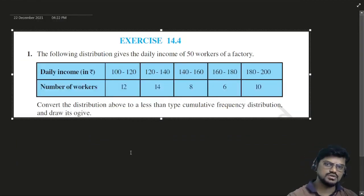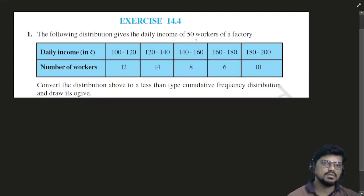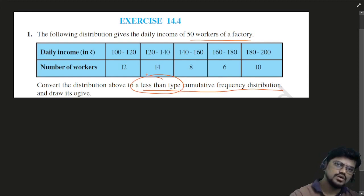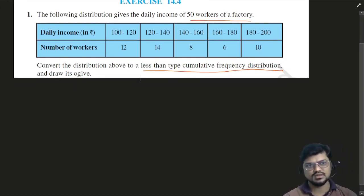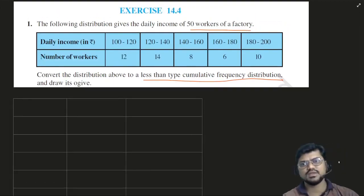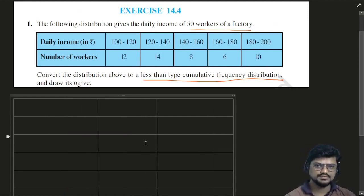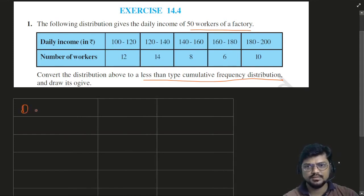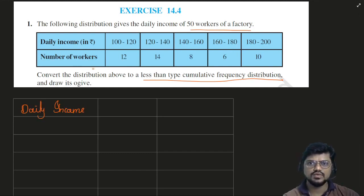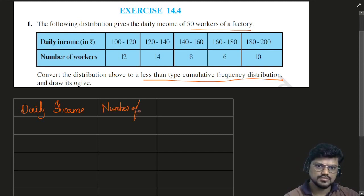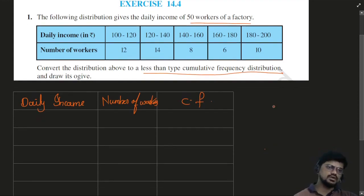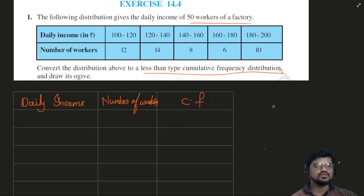The next question: the following distribution gives the daily income of 50 workers of a factory. Convert the distribution to a less-than type cumulative frequency distribution and draw its Ogive, then find its median. Now the less-than cumulative frequency is the same kind of cumulative frequency you were doing before. If you have to make a more-than type, there will be a small difference.